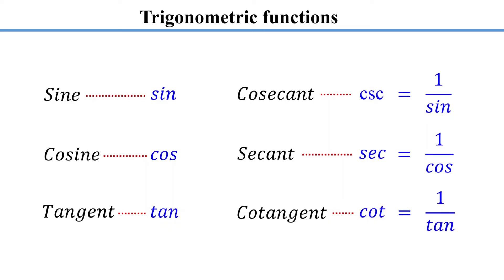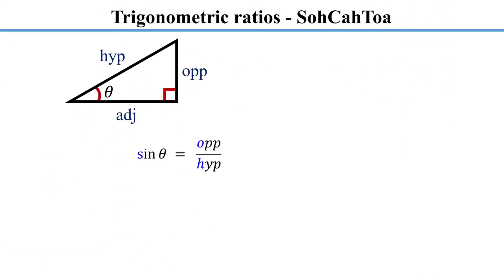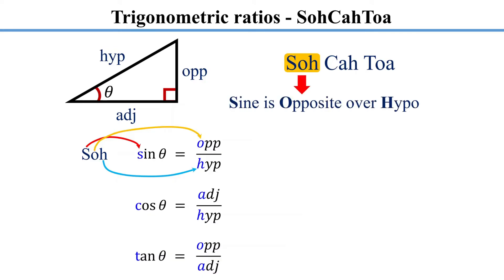Each of these functions relates the angle measures of a right triangle to the ratio of its side lengths. Sine theta is the ratio of the opposite side to the hypotenuse. Cosine theta is the ratio of the adjacent side to the hypotenuse. Tangent theta is the ratio of the opposite side to the adjacent side. A useful mnemonic to remember these ratios is SOHCAHTOA. S is for sine, O is for opposite, and H is for hypotenuse — sine is opposite over hypotenuse.